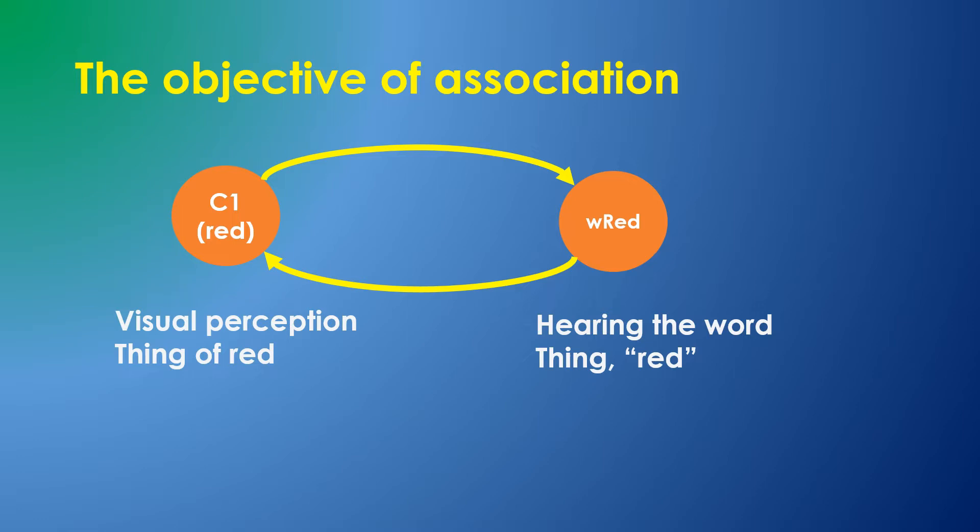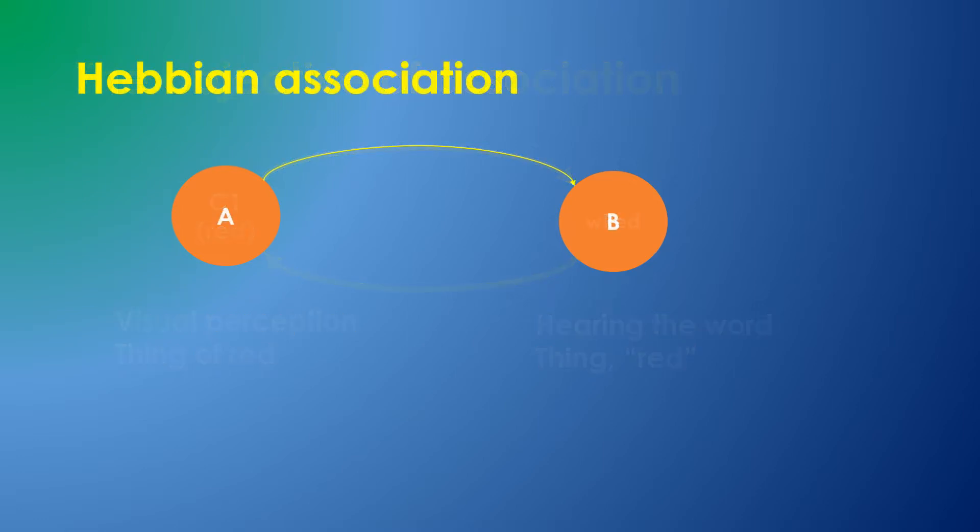Let's abstract this by relabeling things A and B. In Hebbian learning with biological neurons, if A fires just before B, it is likely that A contributed to the firing of B, or it should have if it didn't. Change in strength. So if A fires immediately before B, neurons strengthen the synapse between A and B.